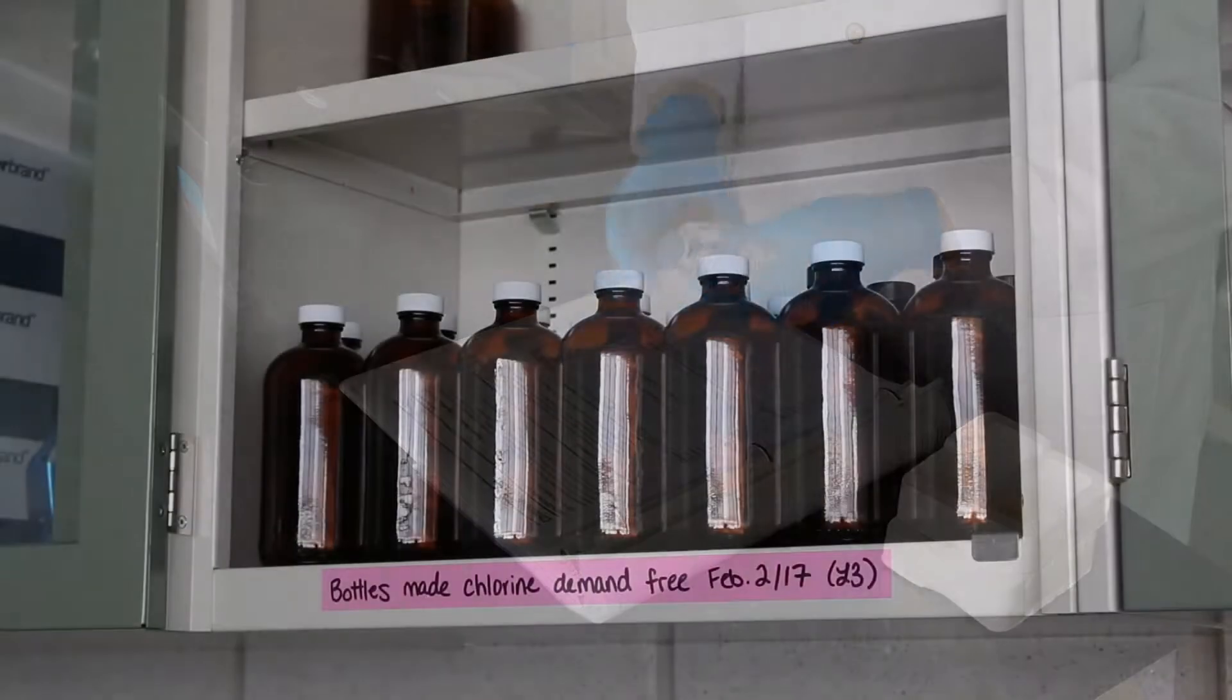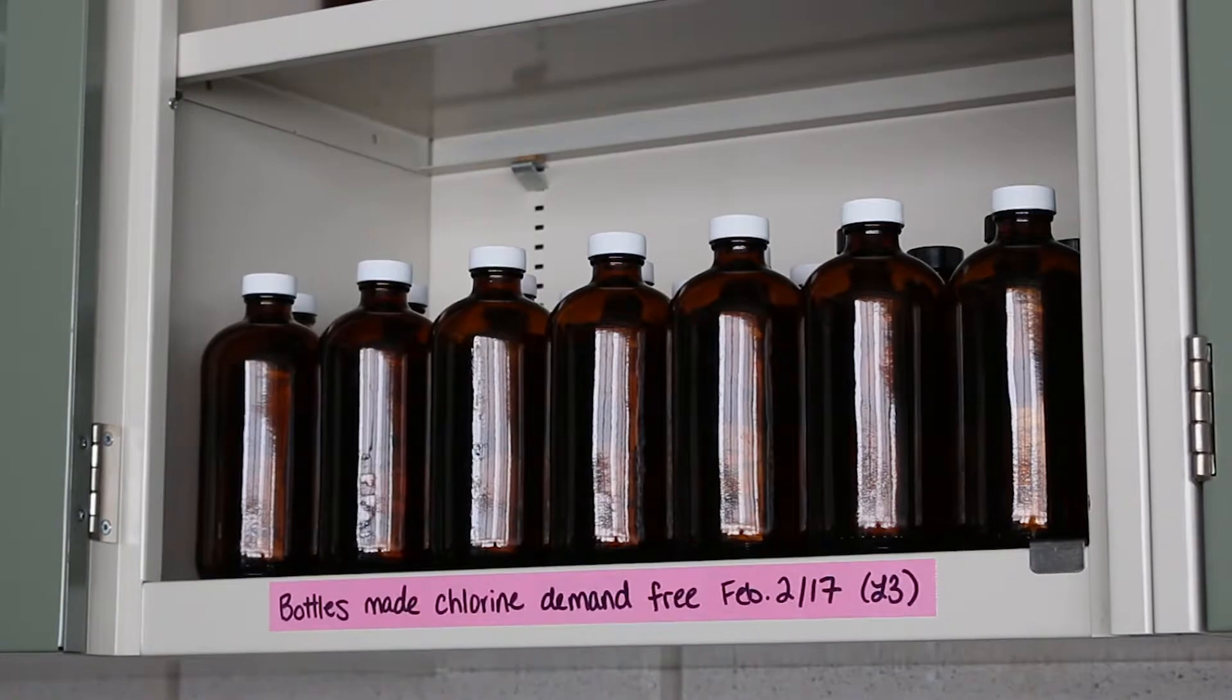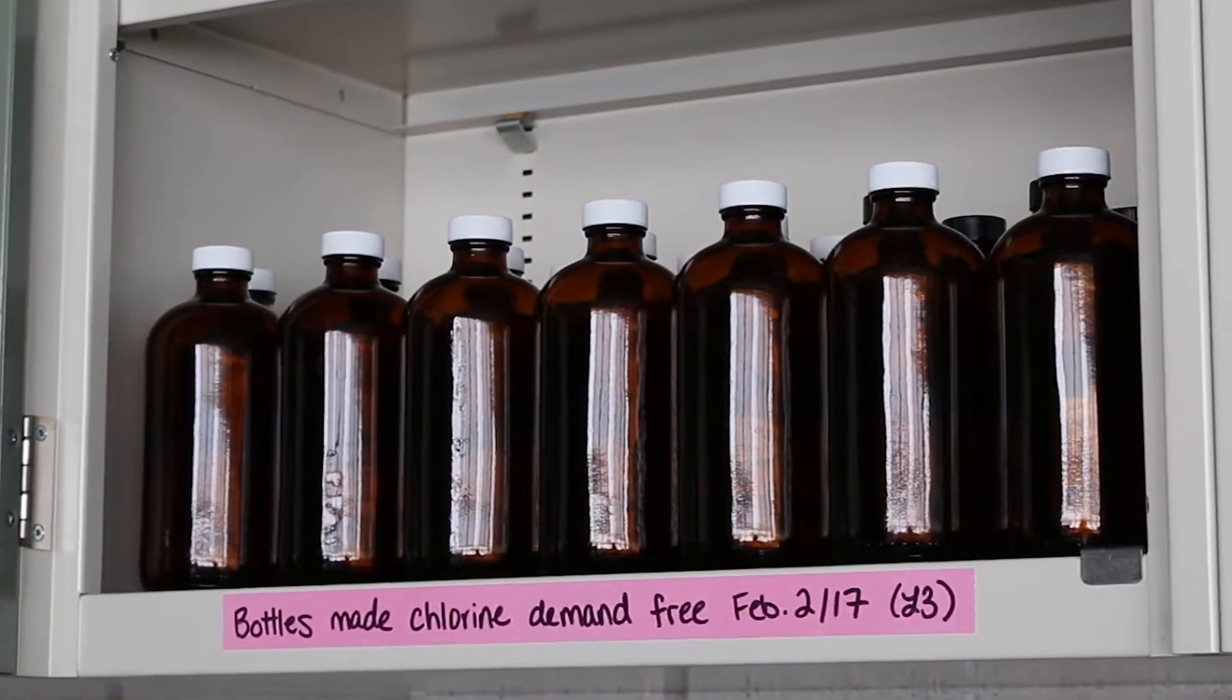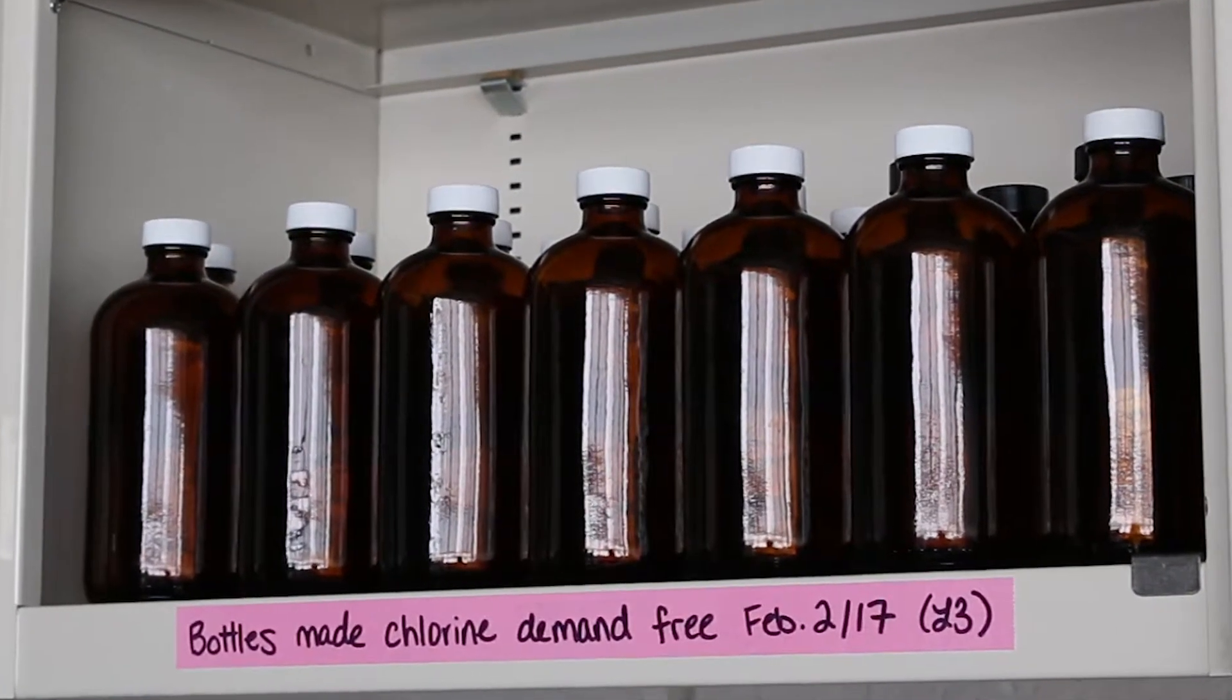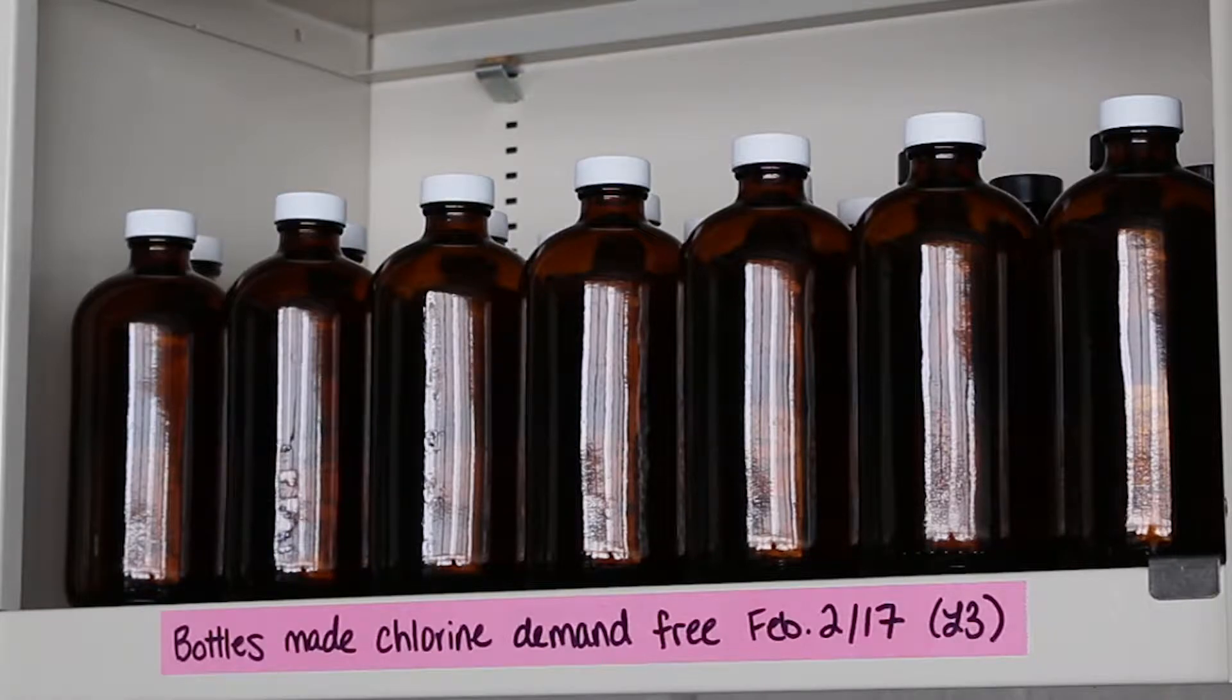Samples should be collected in clean glass containers or sample cells that have been pre-treated to remove the chlorine demand of the container material. See manufacturer method for details.